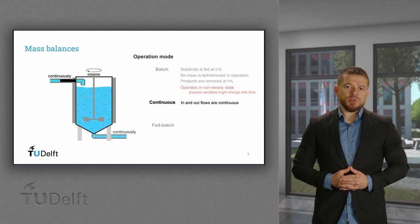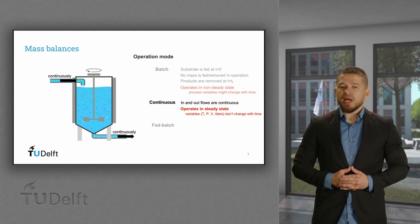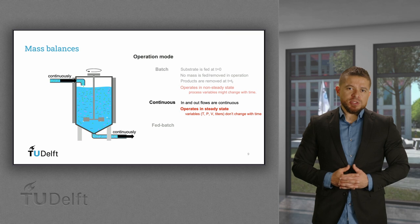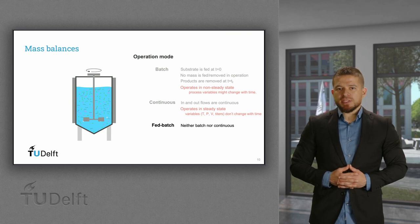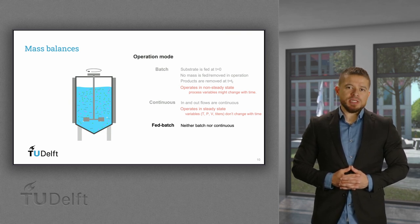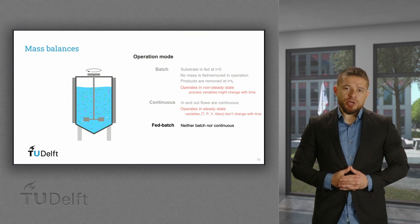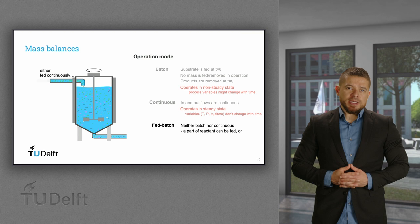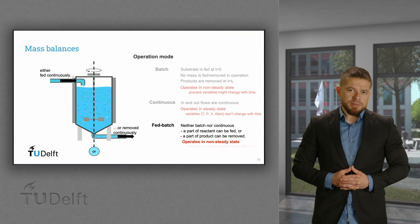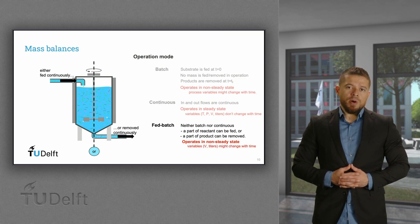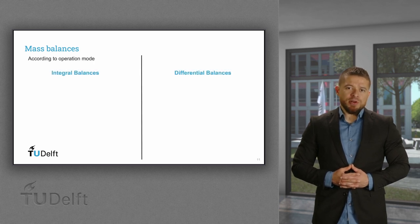For the chemostat, the inflows are continuously fed to the system and the outflows are continuously removed. This is a steady-state operation where process variables do not change along the process. It is important to mention that continuous fermentation is hardly ever used at industrial scale. The fed-batch process has elements of both the batch and continuous systems. In this case, part of the substrate is continuously fed to the system or part of the products are continuously removed. This is again a non-steady-state system where process variables do change along the process.